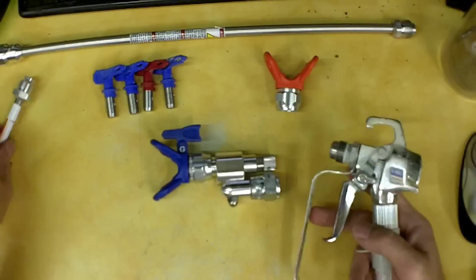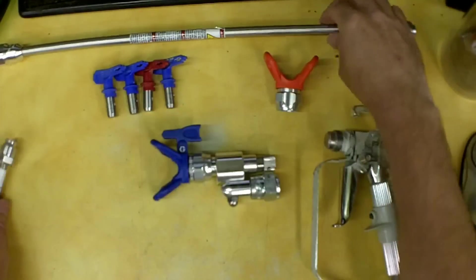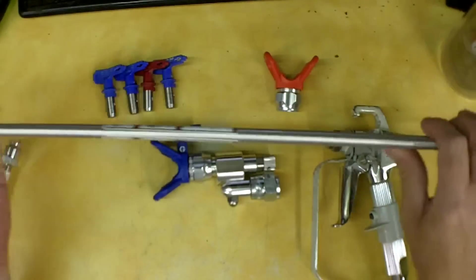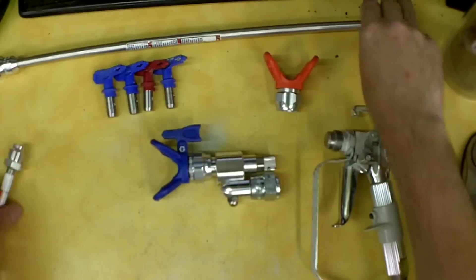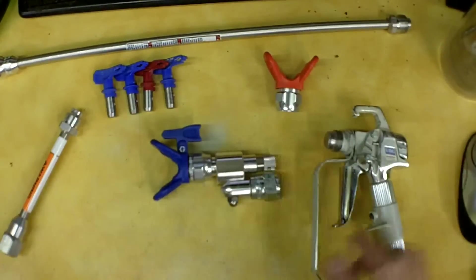The problem starts coming in when you start using extension poles. Here's a 20-inch extension right here, and this is about a 6-inch extension.